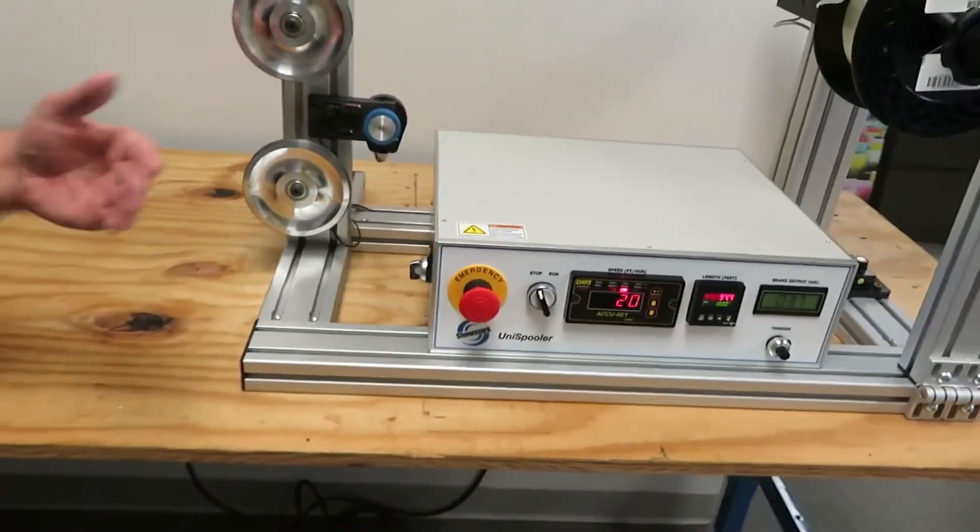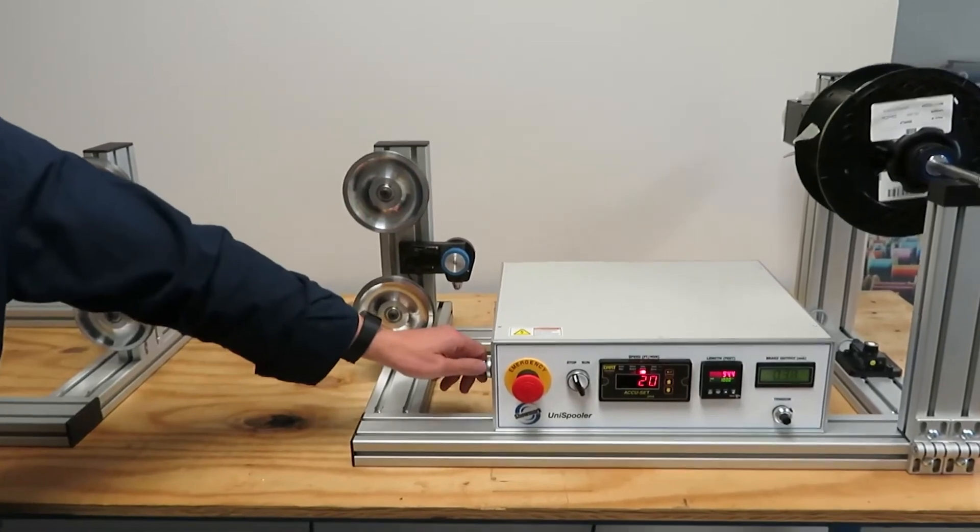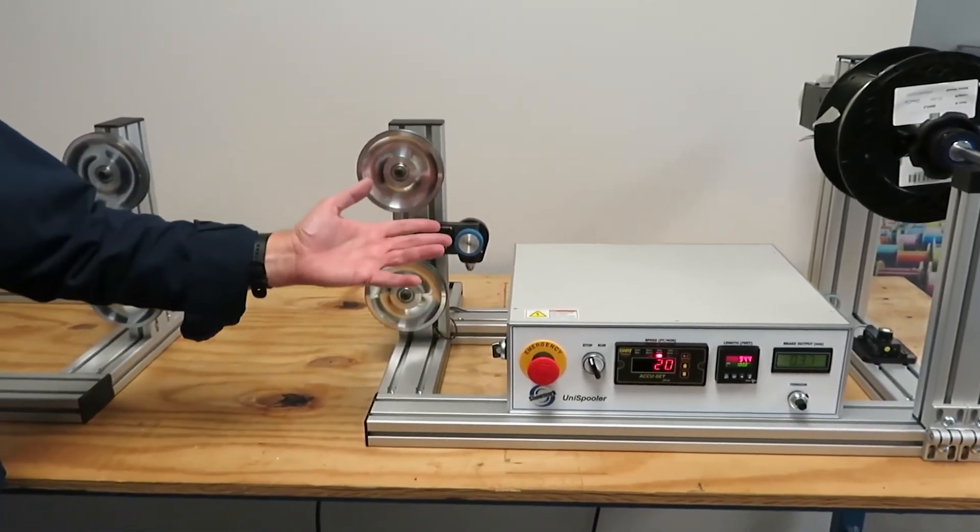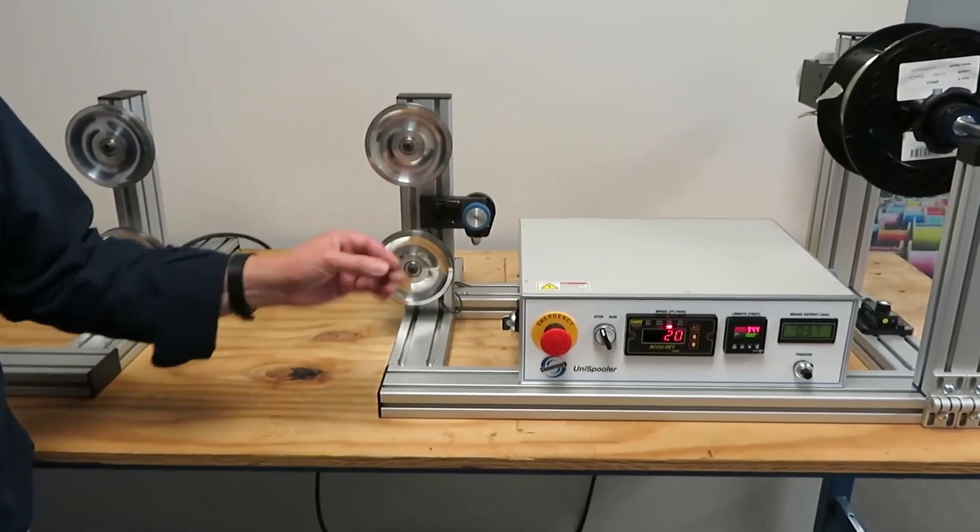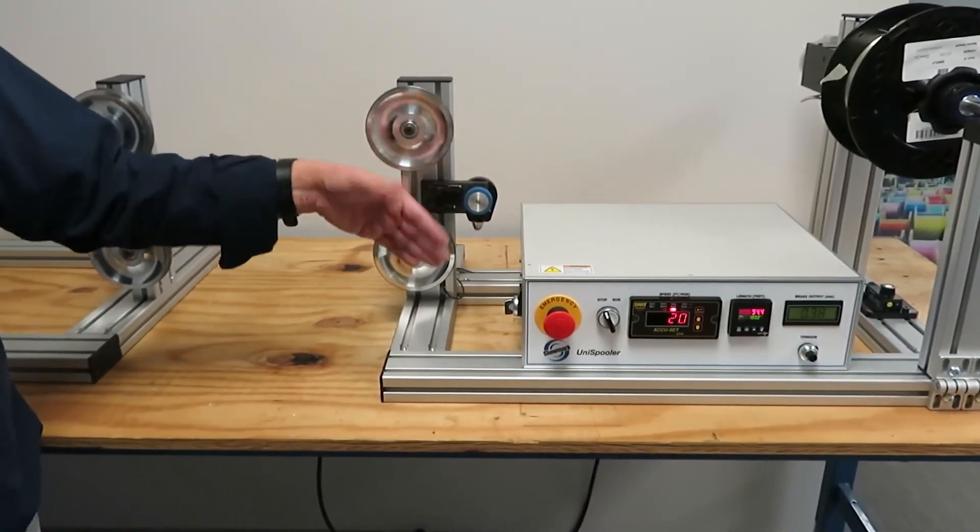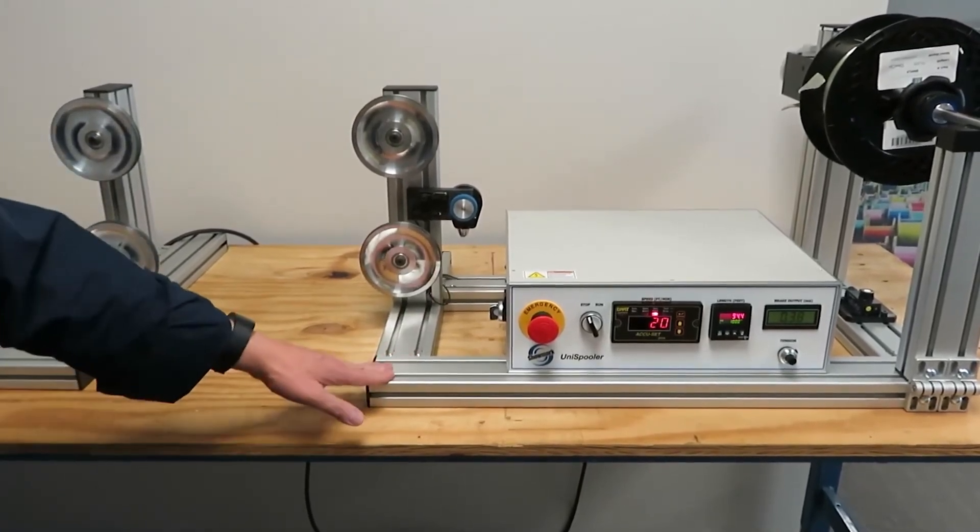Sometimes at the beginning of a run you want to turn it off until things get tightened up enough or even once in a while you have a fiber or a wire that's so fine that the sensor might have trouble picking it up in which case you might want to bypass its function to eliminate false stops.